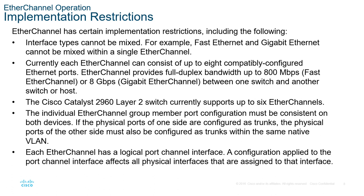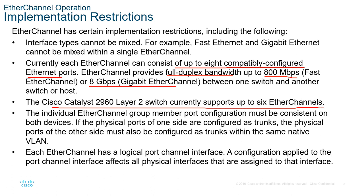In the implementation, there are things to consider, like how many Ethernet ports you can configure. The maximum is up to eight compatibly configured Ethernet ports. 'Compatibly' means they must have the same bandwidth, and the mode should be full duplex. For Fast EtherChannel, you can bundle up to eight fast Ethernet ports, providing up to 800 Mbps. For Gigabit, you can maximize up to eight gig. For the Cisco 2960 Layer 2 switch, it currently supports only up to six EtherChannels.